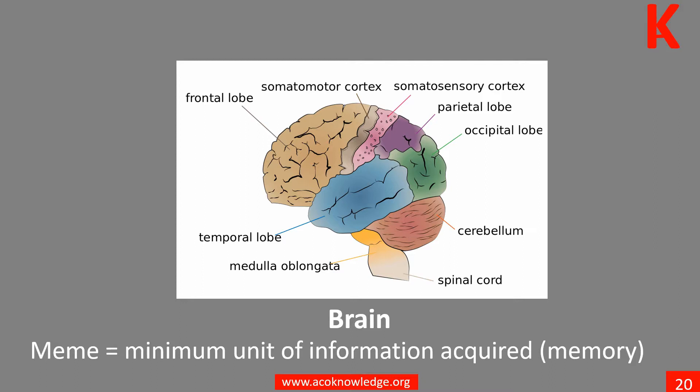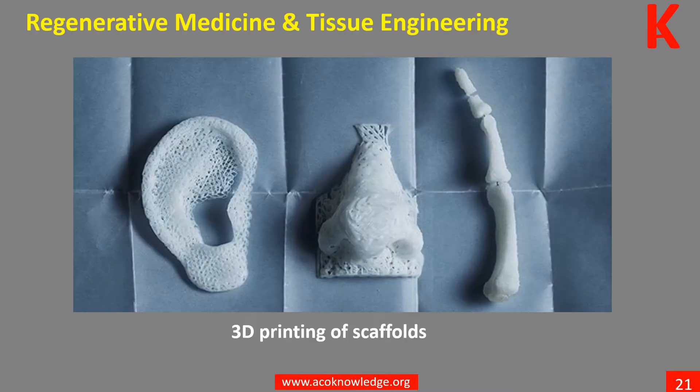Unit 9 addresses the latest advances in biotechnology and life sciences that are enabling major changes in many areas. Genes and MEMS are inherited and acquired information codes. Molecular self-assembling and genetic engineering are some of the rapidly expanding areas of biotechnology.